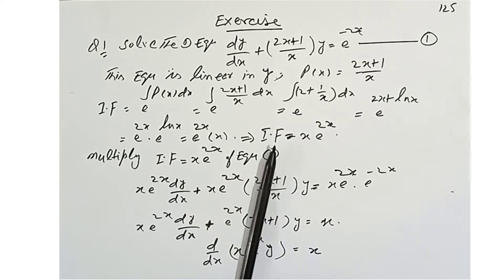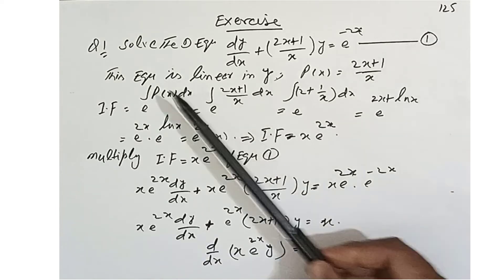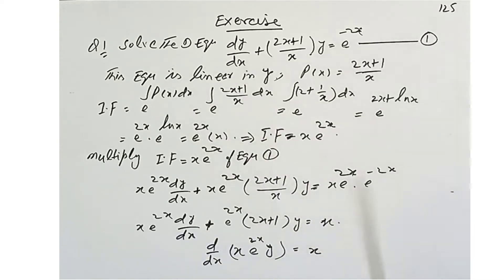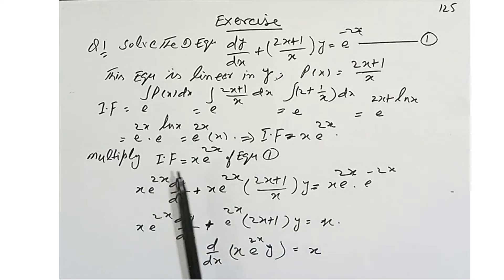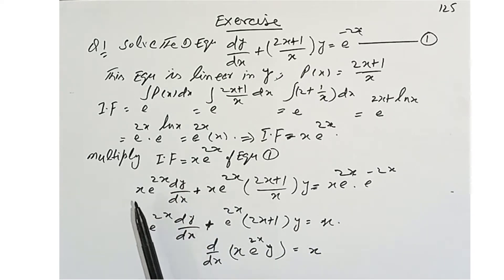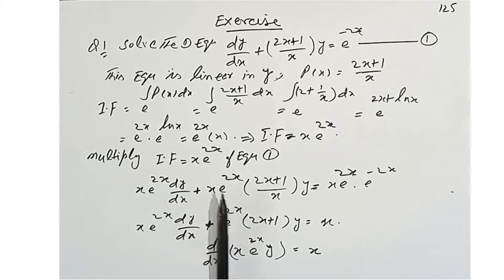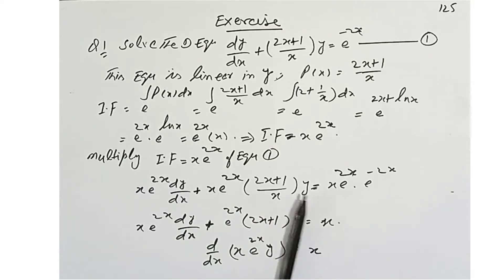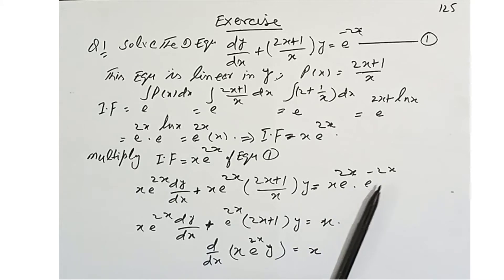The integrating factor is x·e^x. We multiply the original equation by x·e^x to get: x·e^x · dy/dx + x·e^x · (2x+1)/x · y = x·e^x · e^(-2x).